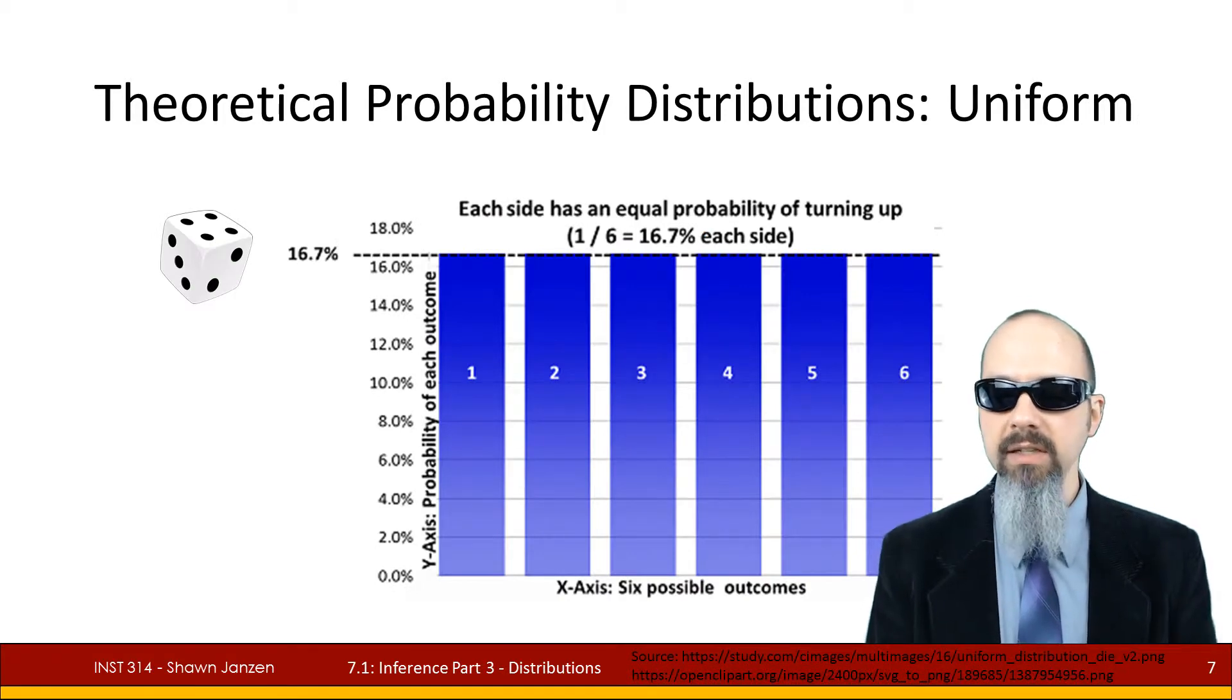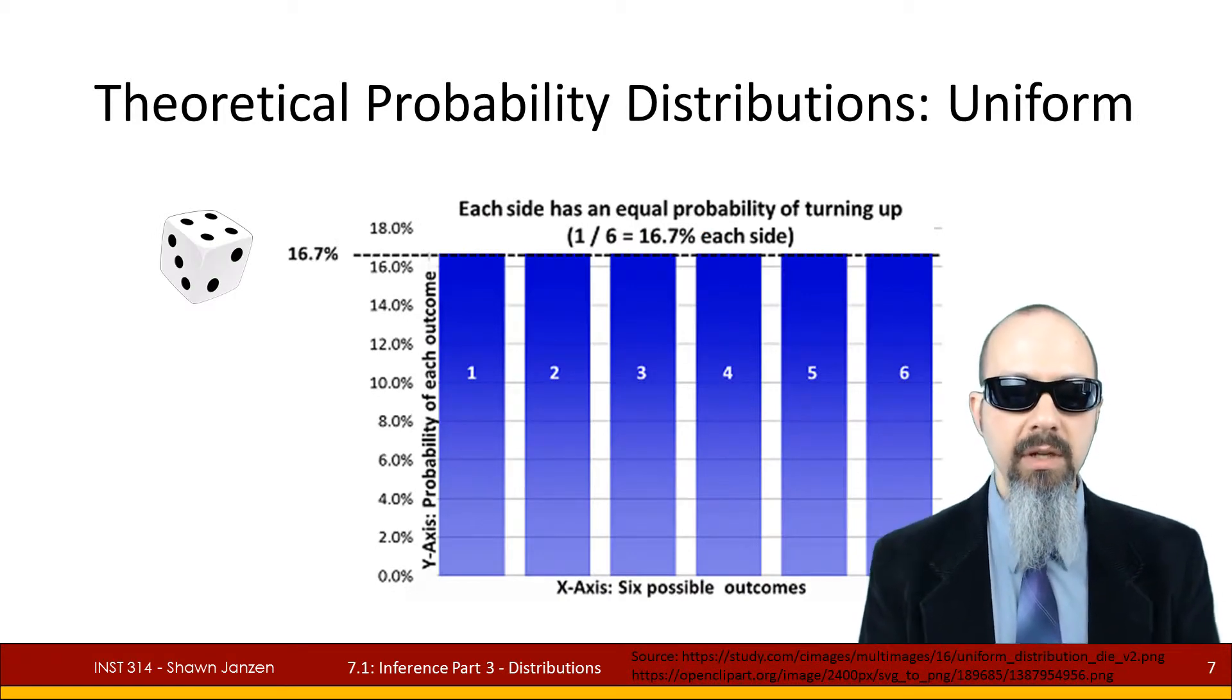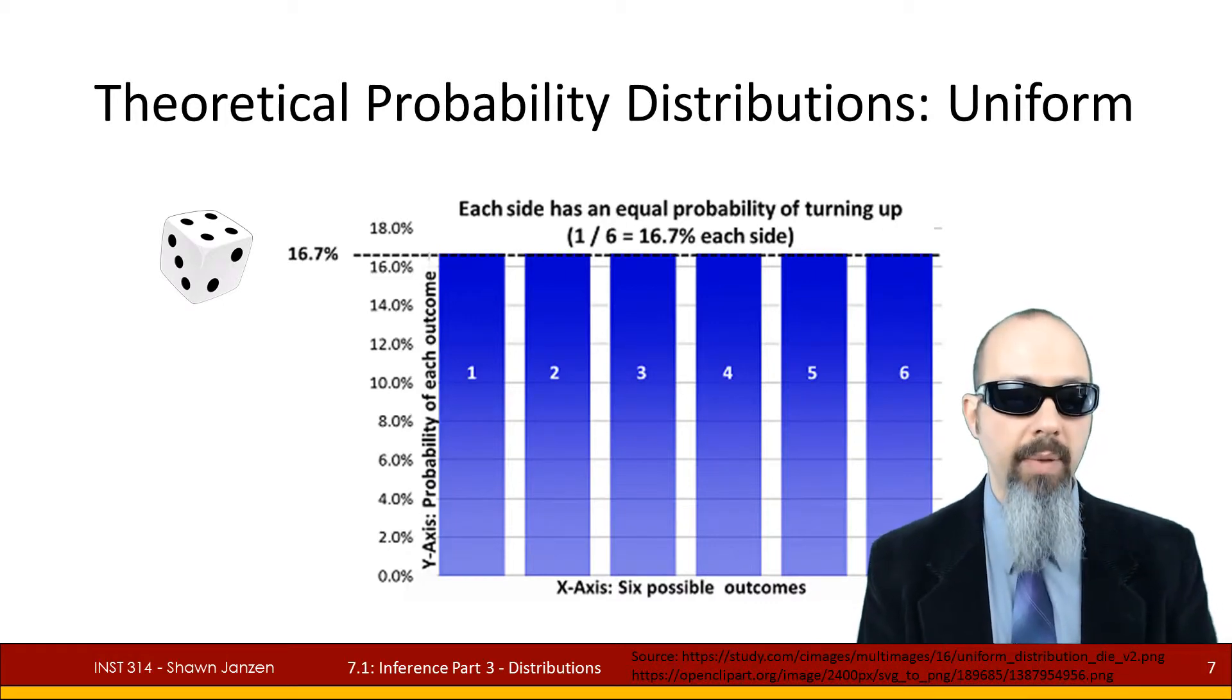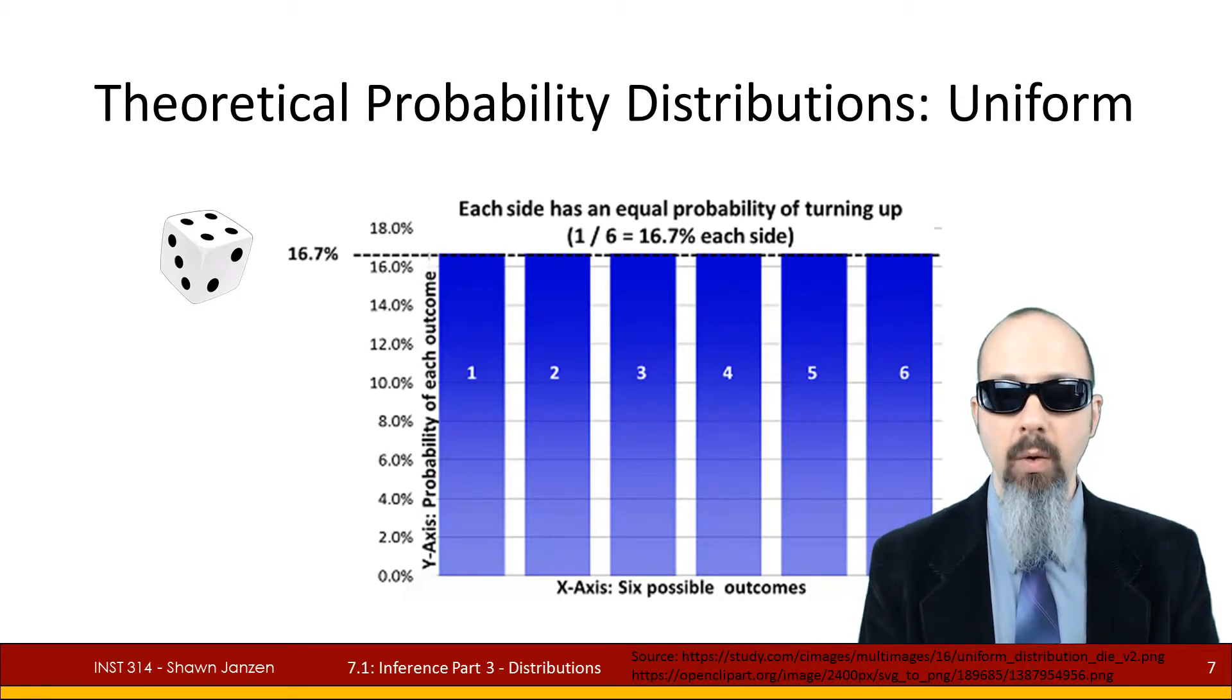The uniform distribution carries us a little bit farther and it says you still have one possible outcome here but the chance of having that one outcome is equal across all possible outcomes. Now I should go back and say that when we're flipping a coin we have about a 50-50 chance if it's a fair coin.